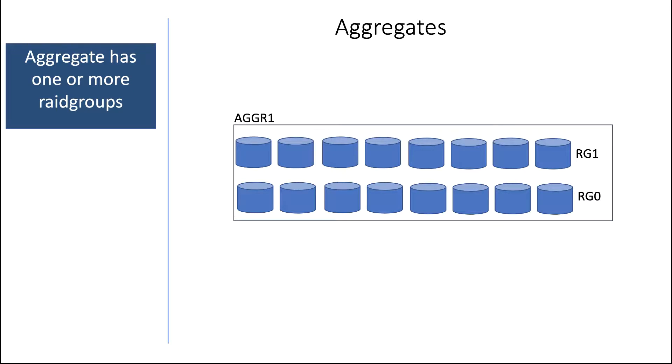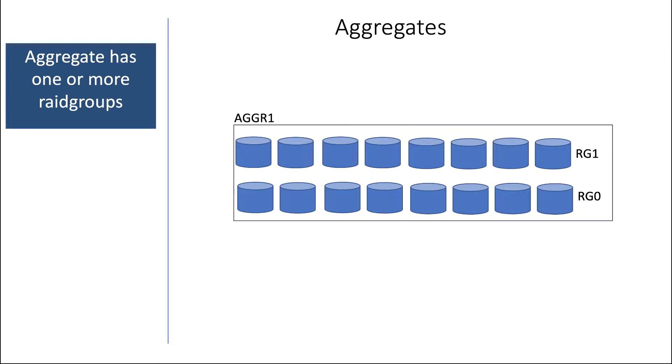A RAID group or a stripe is a grouping of disks that have one, two or three disks that hold parity information. Parity means that these drives contain information about the data on the other disks in the RAID group, so that if a disk in the RAID group fails, the data that was on the failed disk can be recalculated from the parity information.